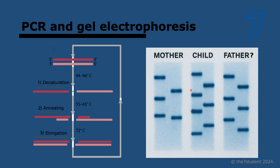Gel electrophoresis often follows from PCR. What it does is separate DNA molecules by length. It's basically a tank with a gel in it and electrodes on both ends — a positive charge on one end and a negative charge on the other. You load your DNA samples and apply the charge. Because DNA is negative, it moves towards the positive pole. Importantly, small molecules move faster than larger ones, so it separates them according to length.